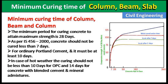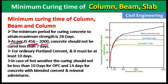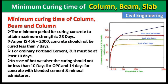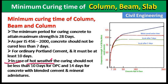It is better to provide curing up to 28 days. The minimum period for curing concrete to attain maximum strength is 28 days. As per IS code 456:2000, concrete should not be cured less than seven days. In practice, people generally do not provide water for more than seven, ten, or fifteen days, but actually we should provide curing till 28 days. According to IS code, curing should not be less than seven days. For ordinary Portland cement in hot weather conditions, the curing should not be less than 10 days.